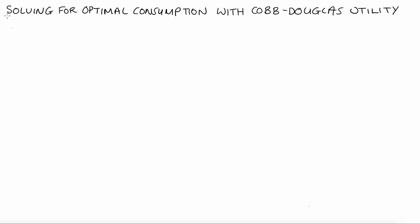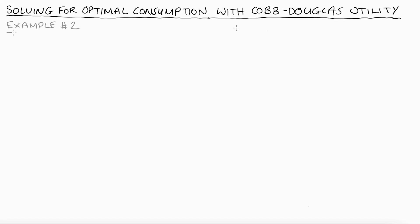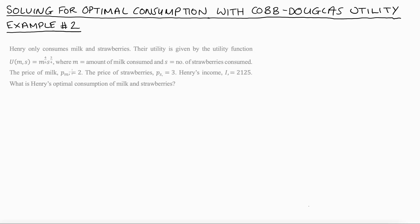Hi everyone. In this video, I'm going to go through an example problem where I solve for the optimal consumption bundle when we have a Cobb-Douglas utility function. This is example number two of these sorts of problems that I've done. I did a previous example that had pretty simple algebra, so this is just a little bit more complicated — we have to do a little bit more maths.